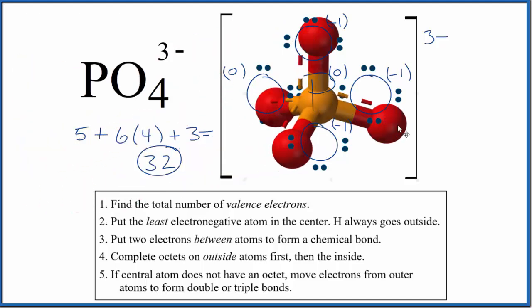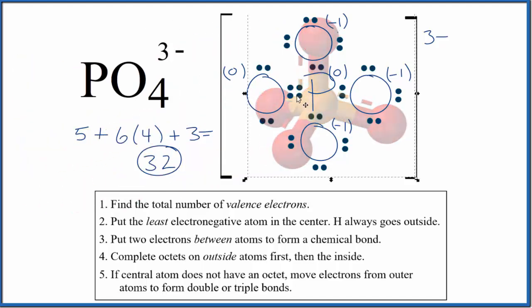let's look at it in three dimensions. We'd see that this double bond is averaged across all of the bonds. That's what the dotted lines are for each bond there. But with Lewis structures, we really can't write that easily. So we'll put our double bond here.